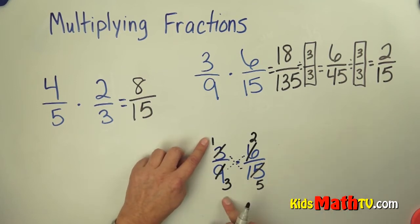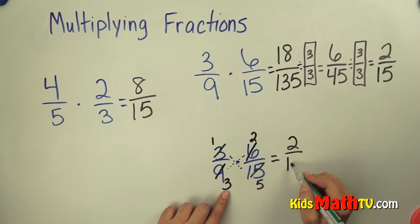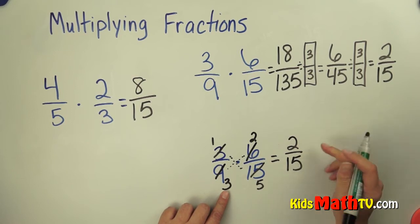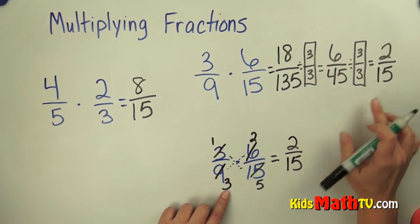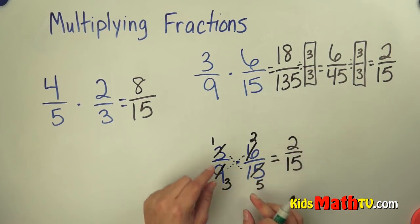Now I have 1 third times 2 fifths. And now I multiply the numerators. 1 times 2 is 2, 3 times 5 is 15. And I get the same answer of 2 fifteenths by doing cross cancelling first.